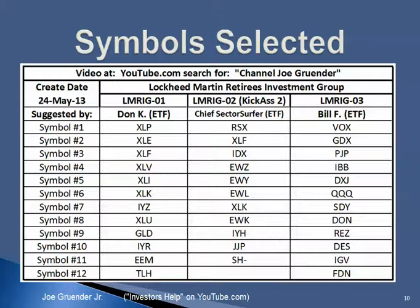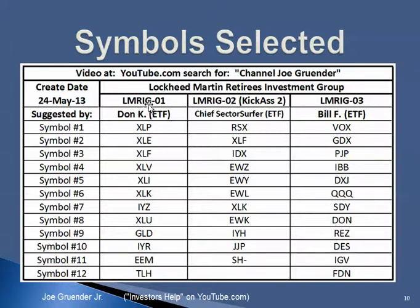The third column on the right: Bill provided me 12 symbols — they're all ETFs, and there are no duplicates between his symbols and those included in Don's symbols. So in effect we're going to have three strategies: one, two, and three. Two of them (one and three) were provided by members of the investment group, and the other one — the center one — came from the Hall of Fame.